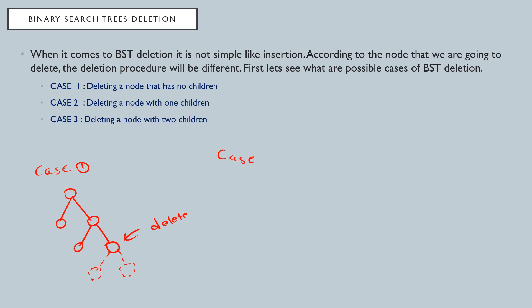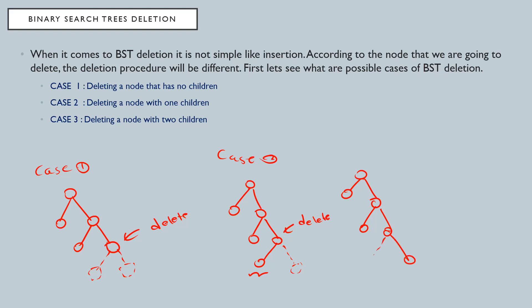Case two means the node has only one child. It can be either a left child or a right child. For example, if I am going to delete this node and it only has a left child, or if I delete this node and it only has a right child — that is case two: only one child.